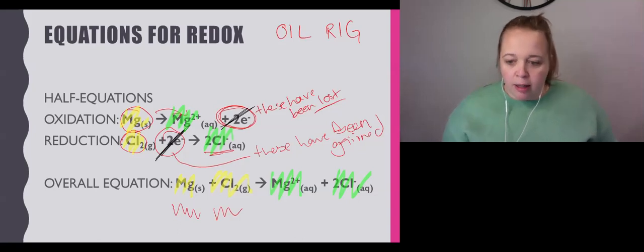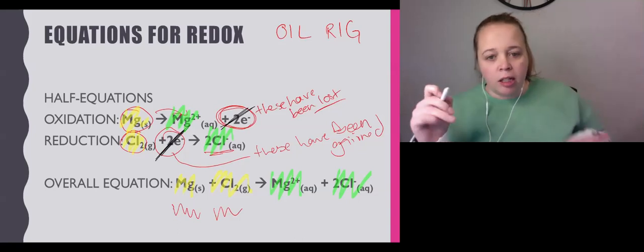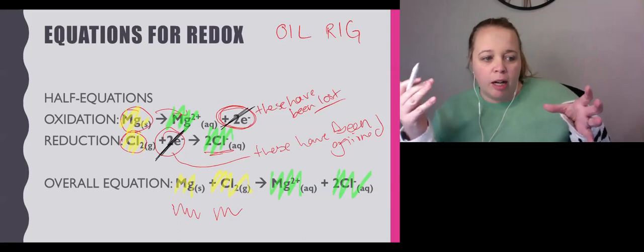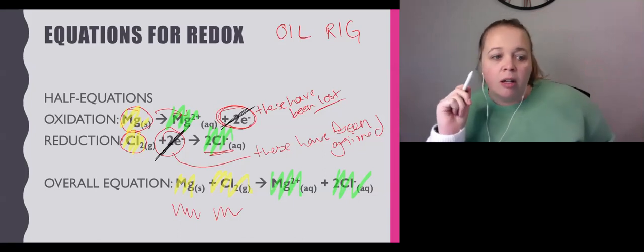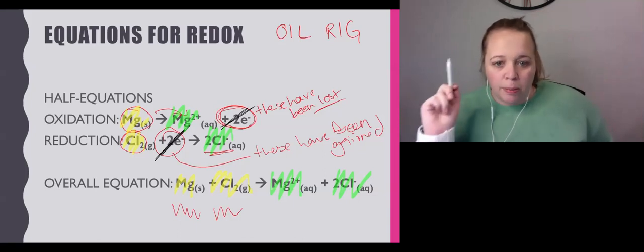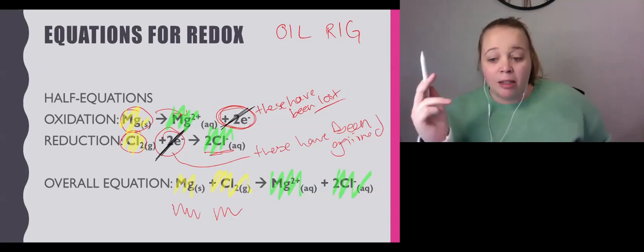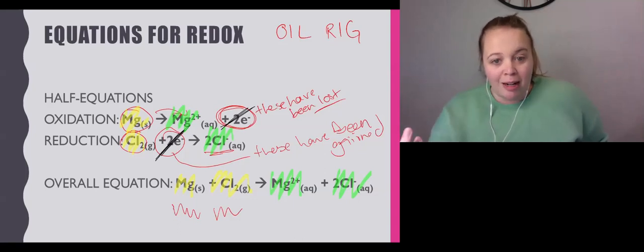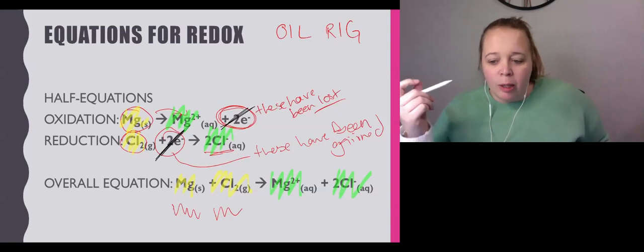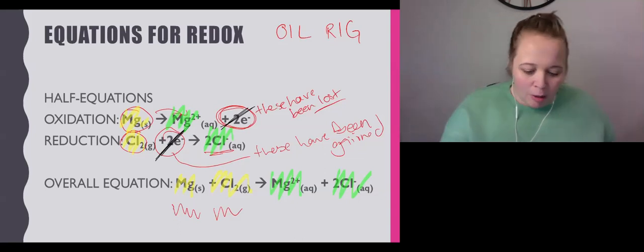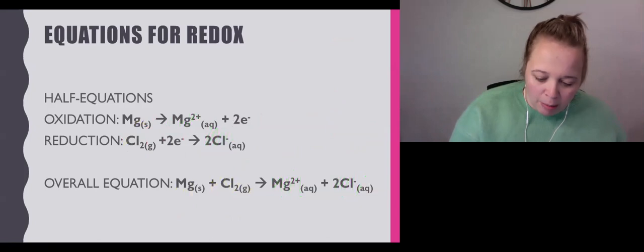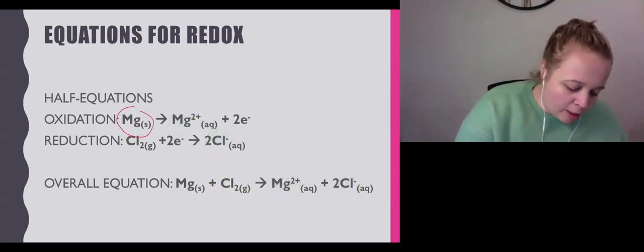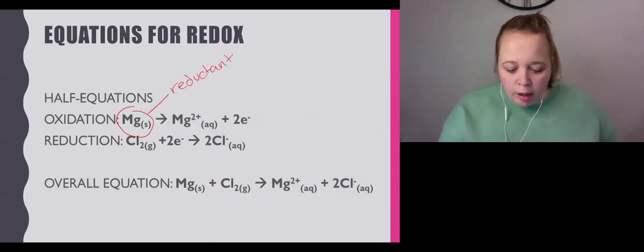That gives us our equation. Why don't I include the electrons? Because they're on both sides, they cancel each other out. In your notes, the oxidation reaction is Mg solid goes to Mg2+ aqueous plus 2e-. The magnesium has lost two electrons to become a magnesium ion.